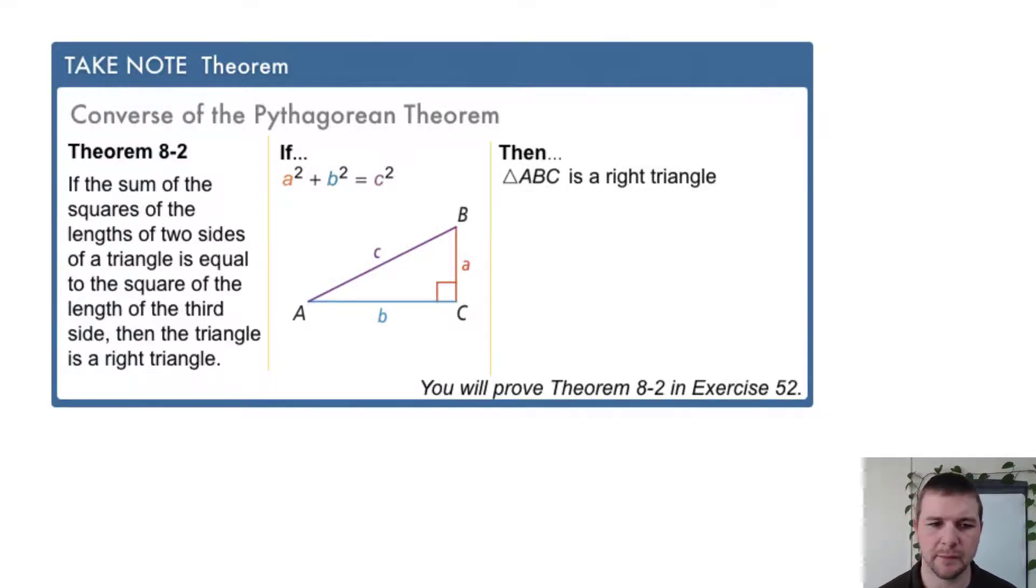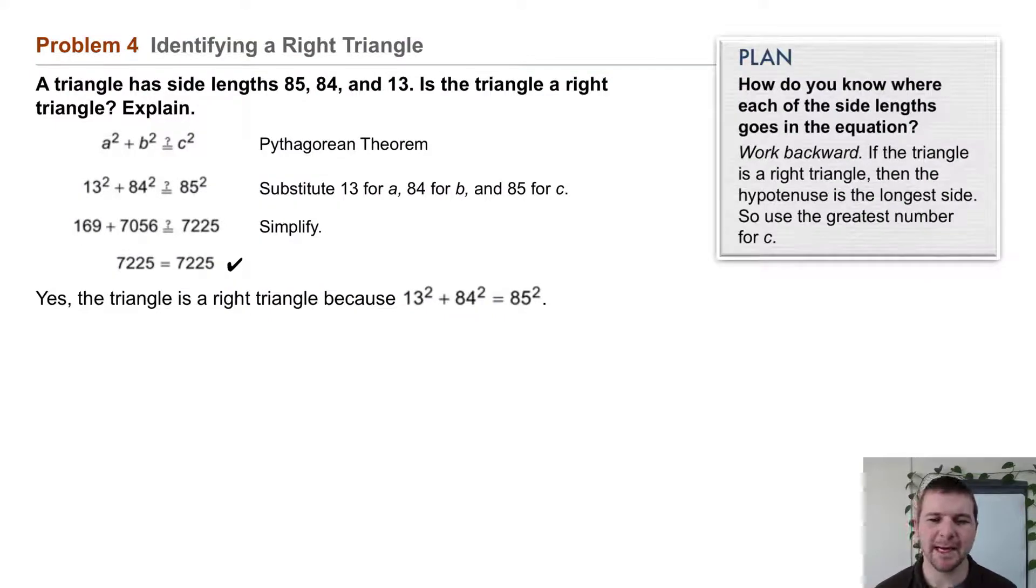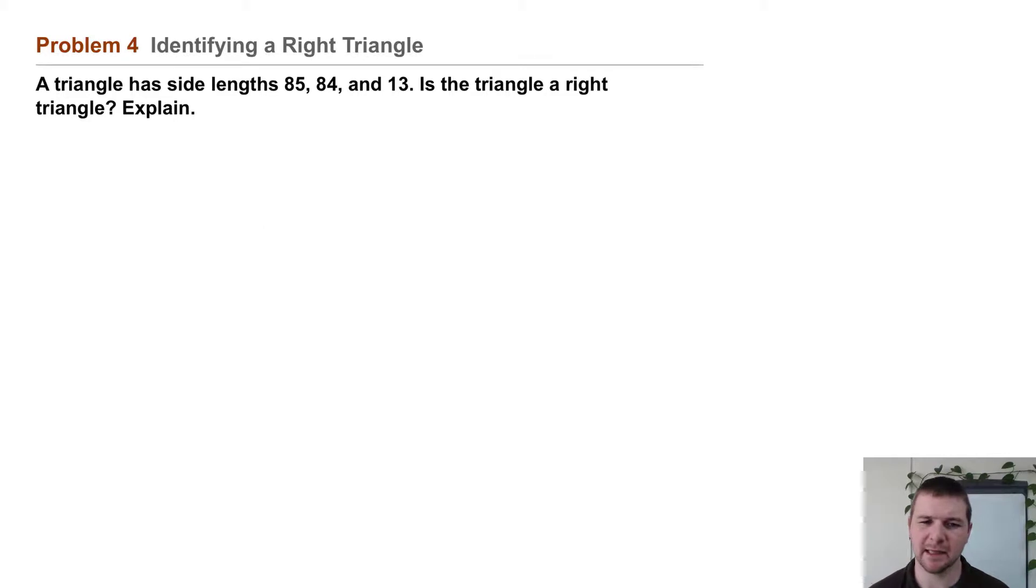Problem 4: Identifying a Right Triangle. A triangle has side lengths 85, 84, and 13. Is the triangle a right triangle? Explain.